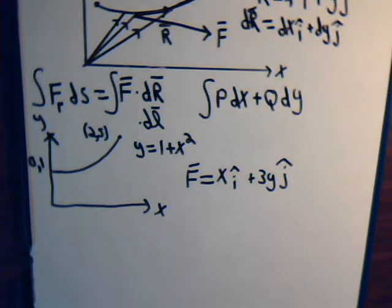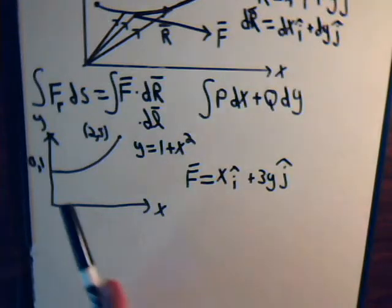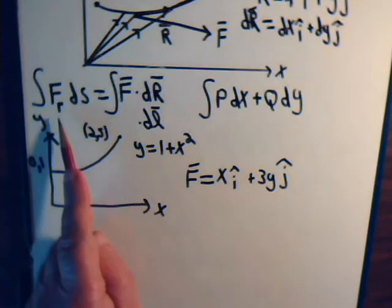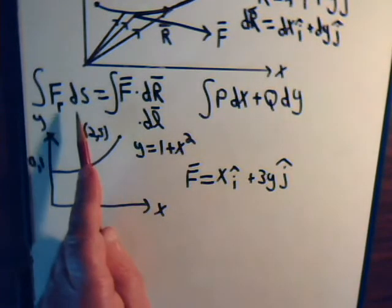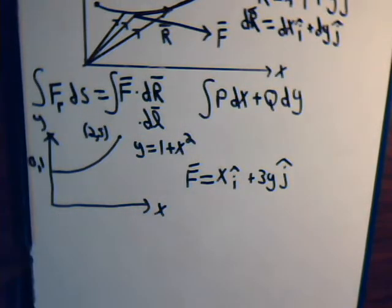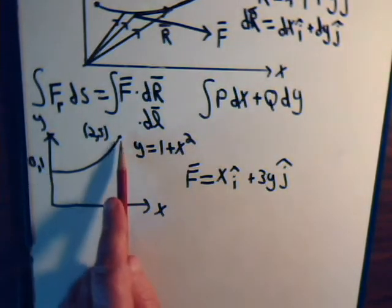And let's say that we wanted to know how much work it would take to move the particle from here to here. Work, of course, is force times distance. So it would be the tangential component of the force along that curve times that differential arc length. And then add them all up from here to here.